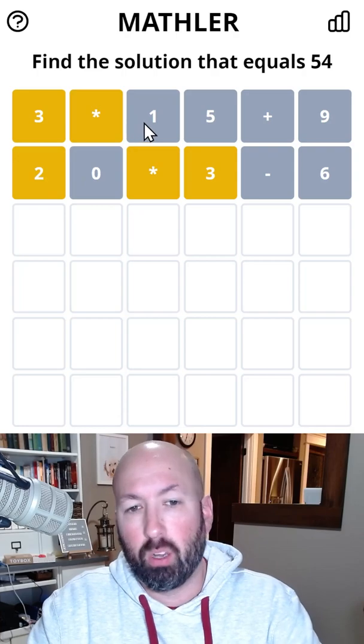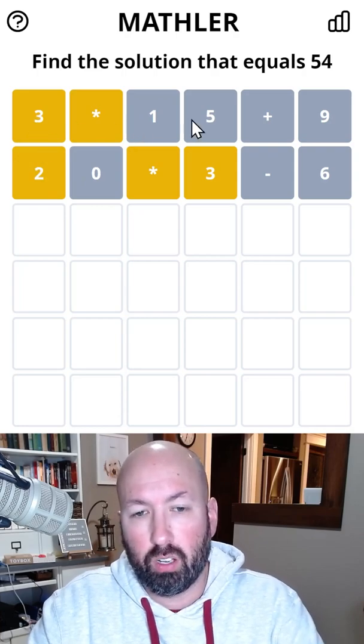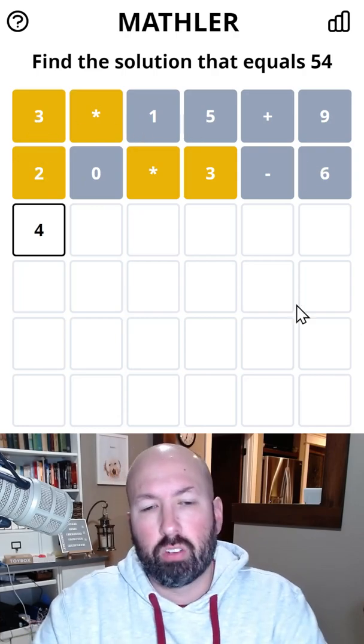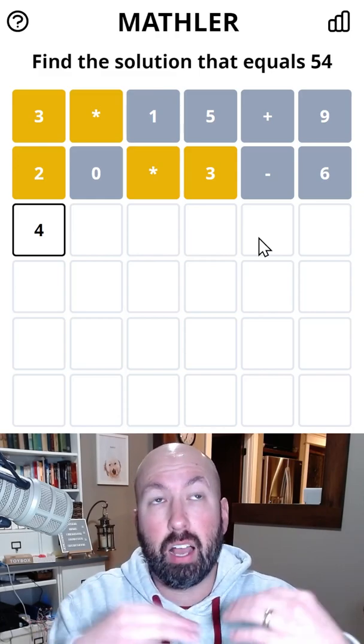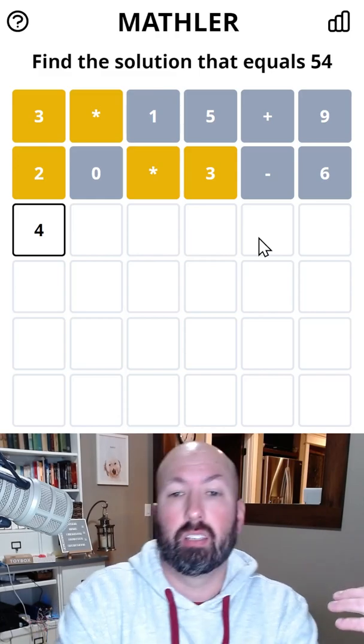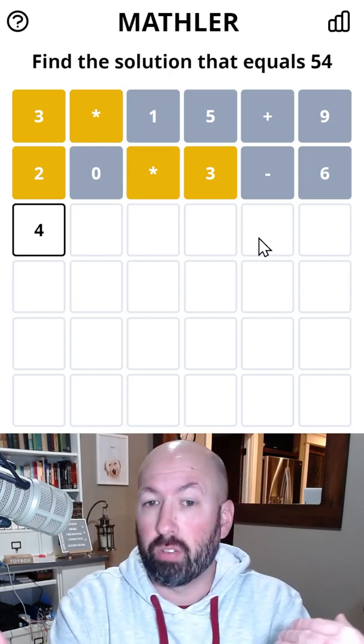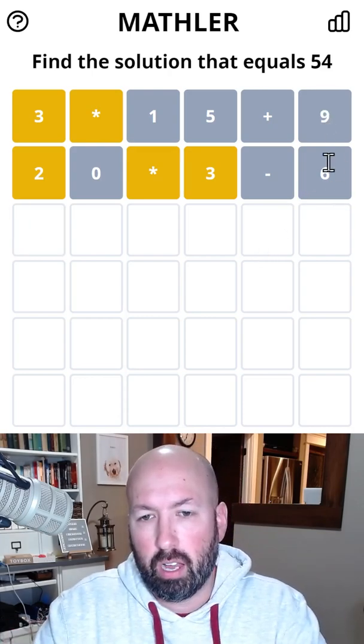Our first digit can't be a 1, a 2, or a 3, or a 5, or a 6. So knowing that the multiplication happens second, I need to divide to end up with something that is a factor of 54. And it can't be 6 or 9.